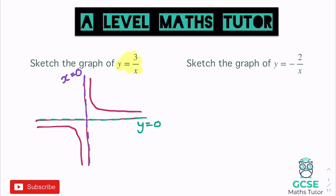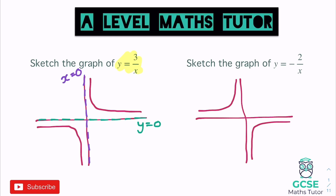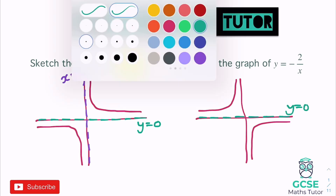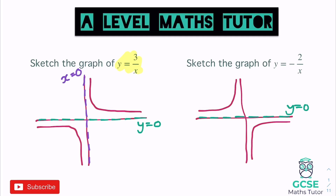For the negative reciprocal graph on the right, we won't focus on it too much in this video, but it's important to know what it looks like. It's almost like a mirror image — the curve goes in the top-left and bottom-right quadrants. The asymptotes are in the same place: y = 0 along the x-axis and x = 0 along the y-axis. That's what the negative version looks like.